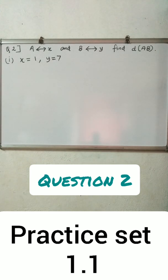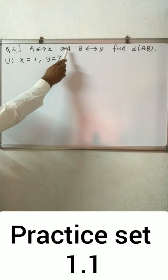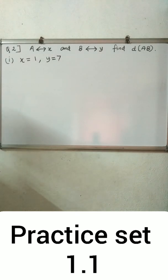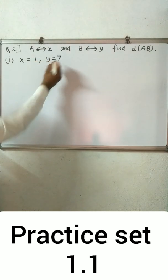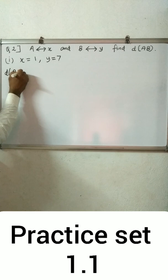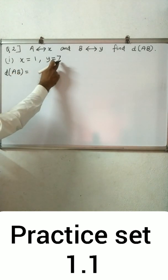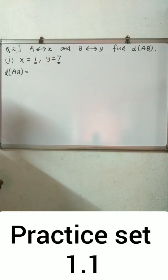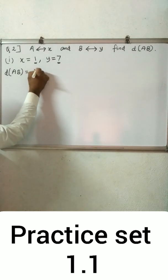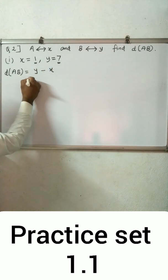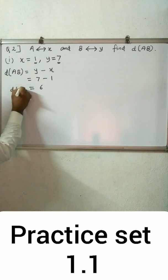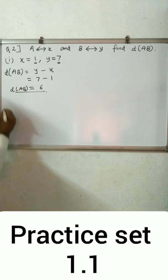Question number 2: Coordinate of point A is given as x and coordinate of point B is given as y; find distance AB. First example: x equals 1 and y equals 7. Since coordinate of y (7) is greater than coordinate of x (1), distance AB equals coordinate of y minus coordinate of x = 7 minus 1 = 6.